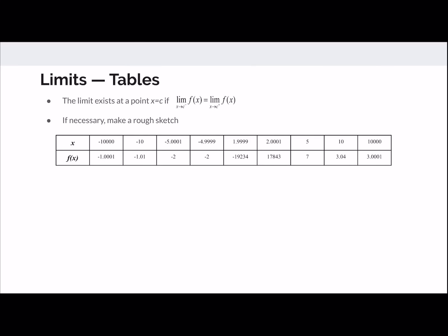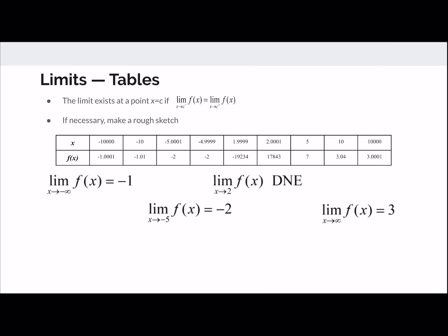Looking at a table: as x goes to negative infinity the function appears to approach negative 1, suggesting a horizontal asymptote at y equals negative 1. As x goes to negative 5 it approaches negative 2. At x equals 2, from the left the values approach negative infinity (around negative 19,000), while from the right they approach positive infinity (around positive 17,000), so the limit doesn't exist — indicating a vertical asymptote at x equals 2. As x goes to positive infinity the value approaches 3, giving a second horizontal asymptote at y equals 3.